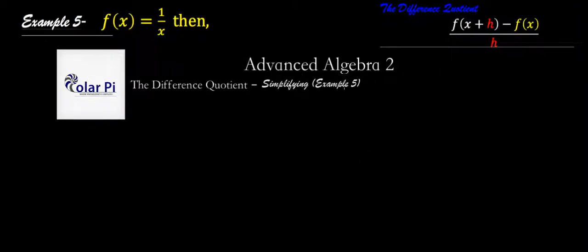Hey guys, welcome. So example 5 here. This time we're evaluating and simplifying the difference quotient for this function f of x equals 1 over x.